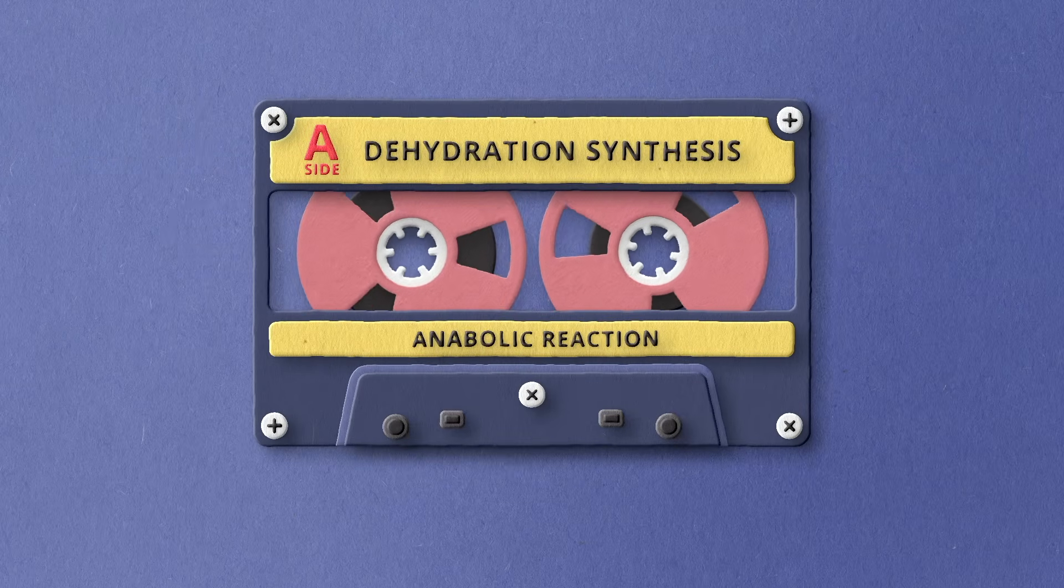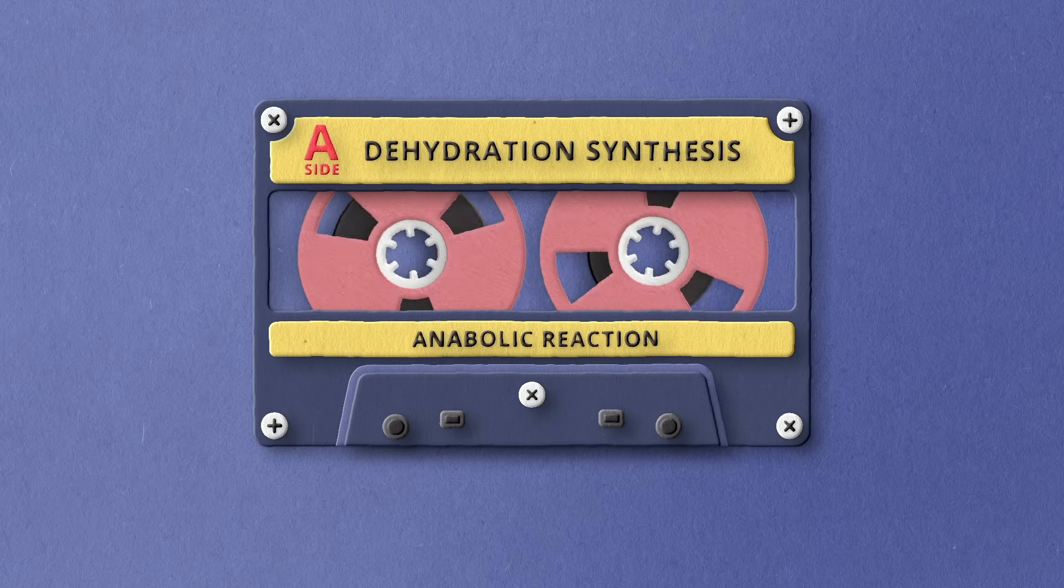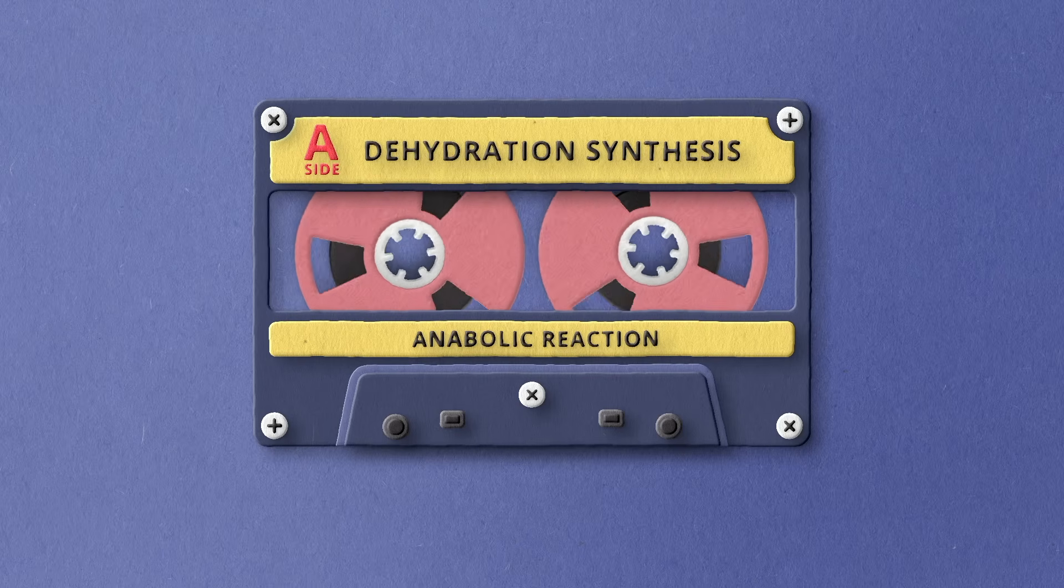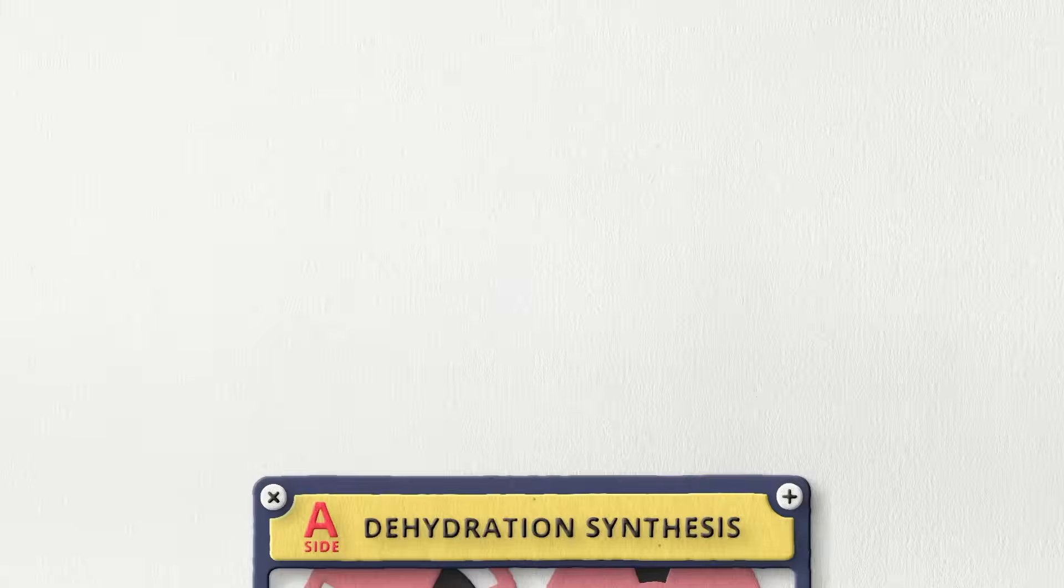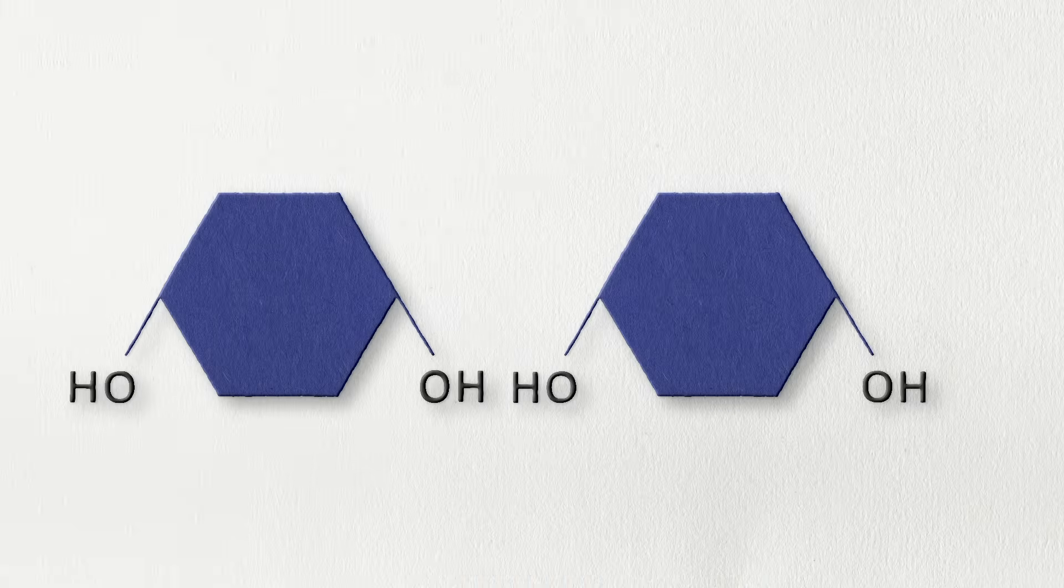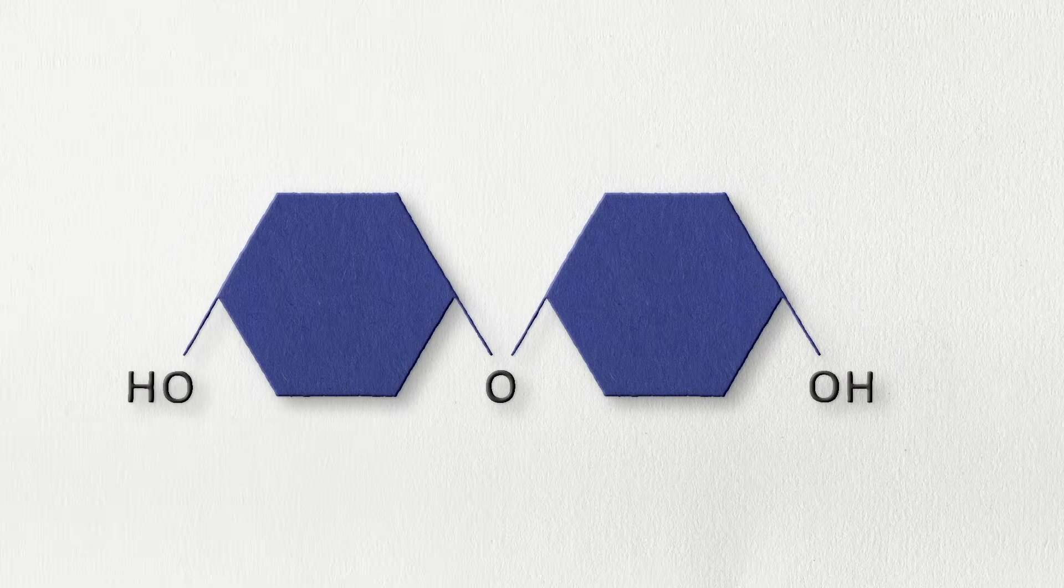In dehydration syntheses, which is a type of anabolic reaction, new bonds are formed by removing water molecules. Two smaller molecules are joined covalently because the OH from one molecule and the H from another is removed, and they join together to form H2O, or water.